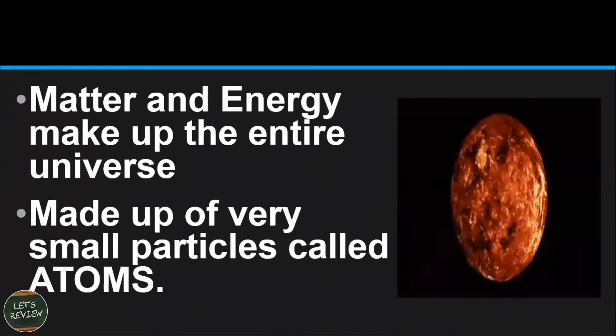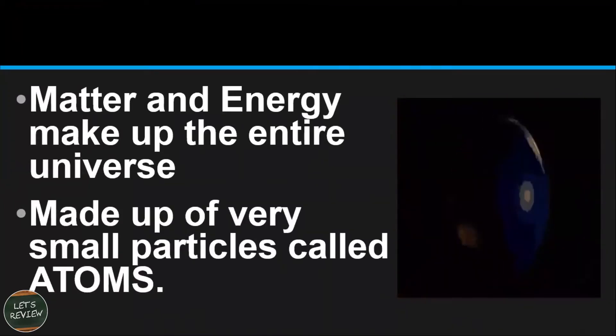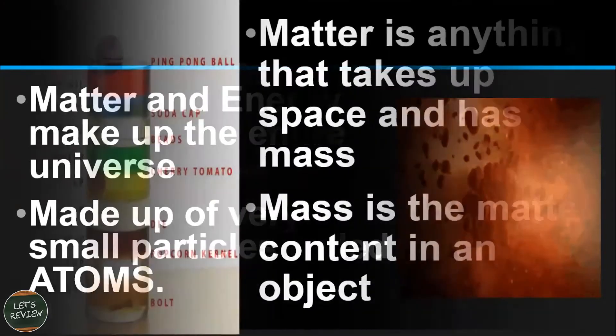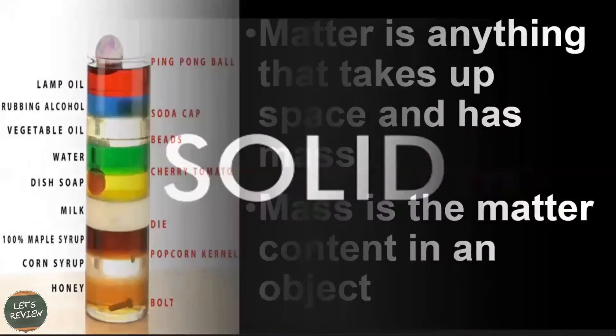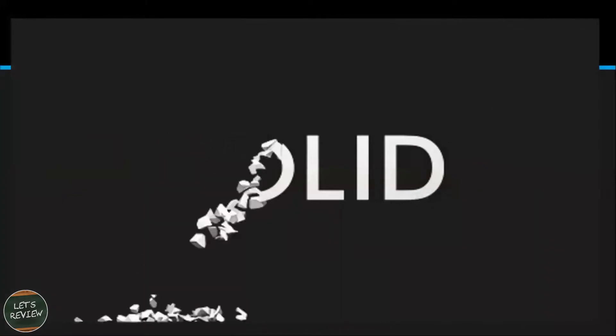Matter is made up of very small particles called atoms. Matter is anything that takes up space and has mass. Mass is the matter content in an object. Matter can be in solid or liquid form.